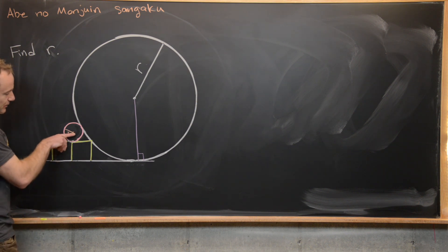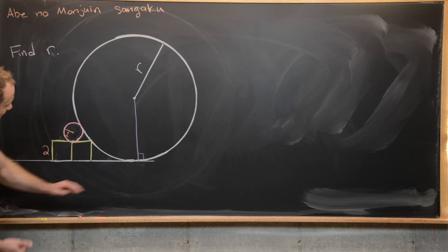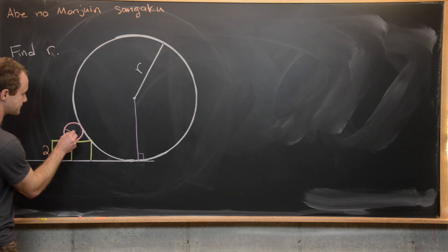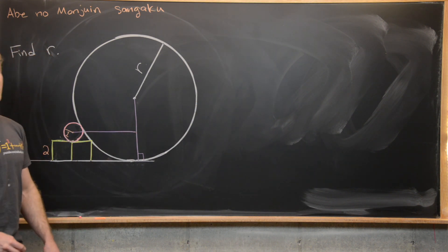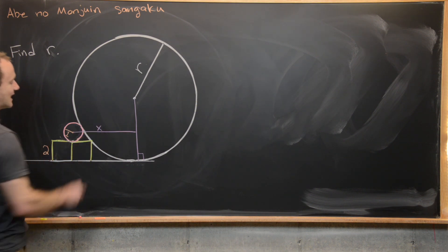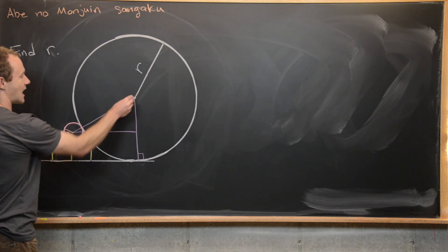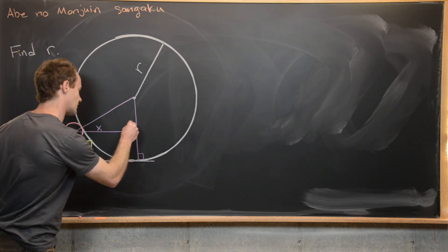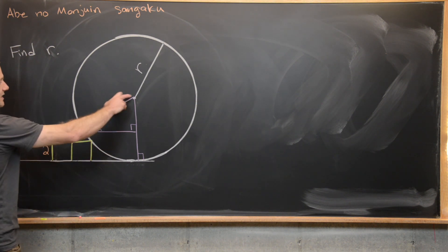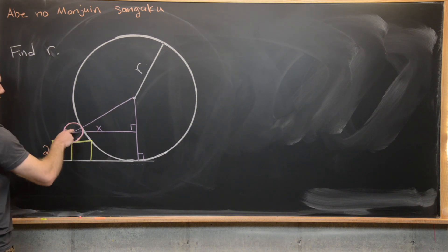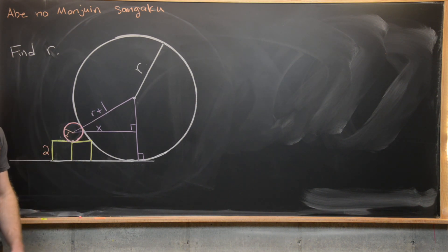Next, I want to put a horizontal line emanating from the center of the smaller circle, parallel to the bottom line. We don't know the length of this segment, so I'll just call it x. Let's complete this into a right triangle by putting the hypotenuse in. The hypotenuse is R plus 1, because we have the radius of the large circle plus the radius of the smaller pink circle.